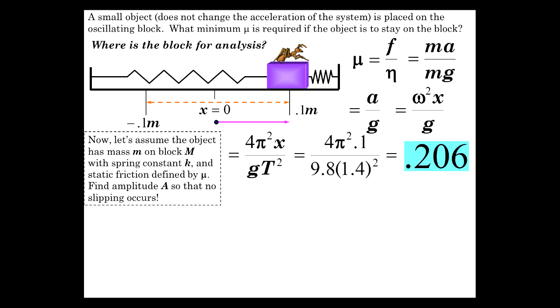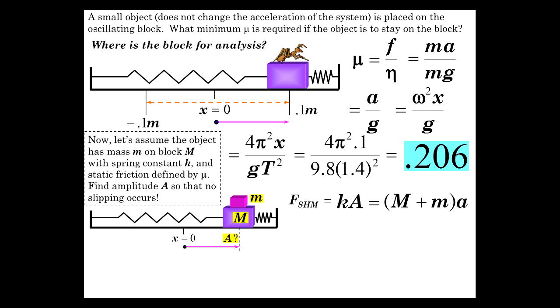Now let's do a similar problem but kind of generalize it. Let's go ahead and let there be a small m on big M and come up with an equation for the amplitude such that that little block doesn't slip. In this case, we have the spring constant as well. Now little m is going to change the mass of the system. Well, the SHM force, which is really the net force trying to restore it back to its equilibrium position, that's what we mean by F SHM. It's the restoring force. In this case, it's the spring force. It's also the net force is equal to kA, spring constant times the amplitude. And that's mA, but it's the combined mass times the amplitude.